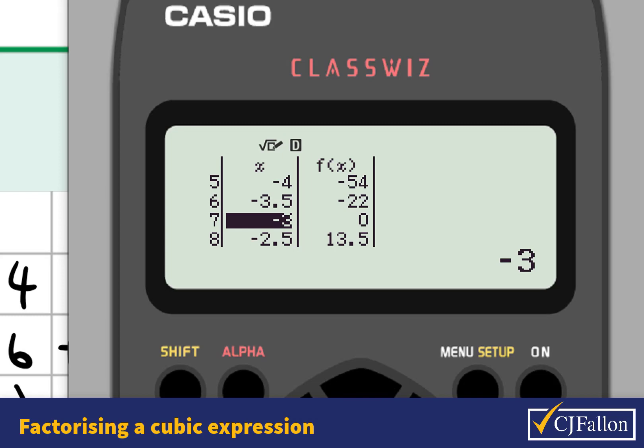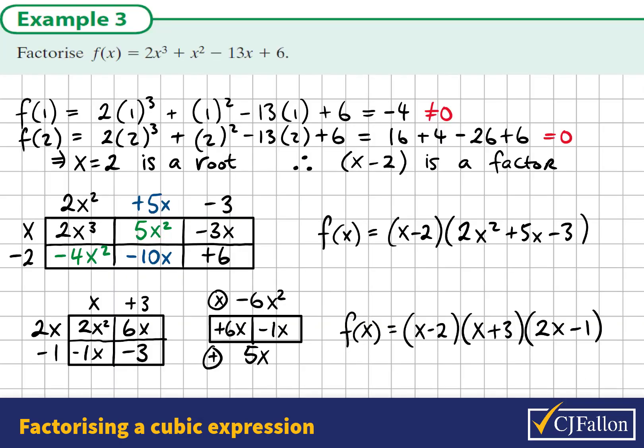I see negative 3 is a solution. I see 0.5 or a half is a solution. And I see 2 is a solution. So we have 3 solutions: 2, a half and negative 3.